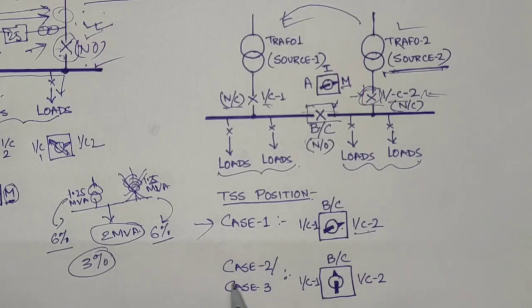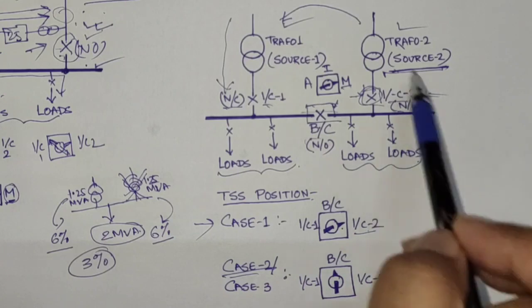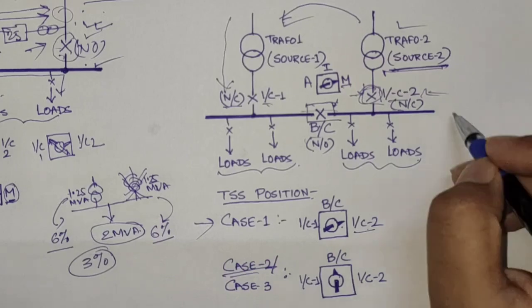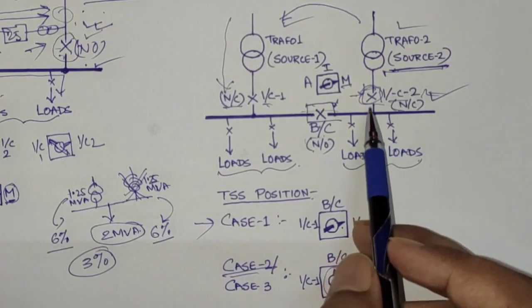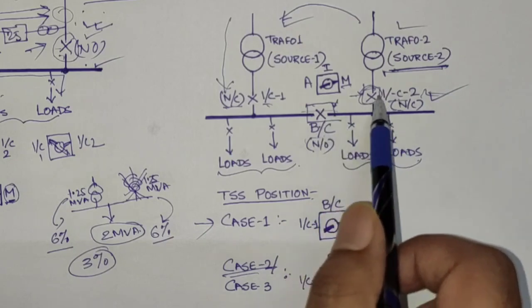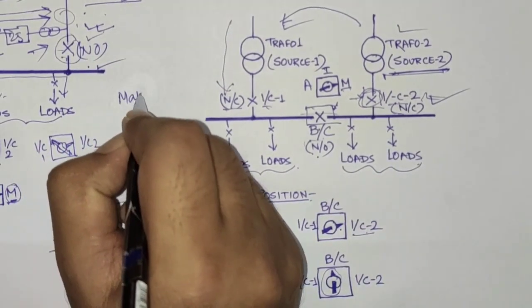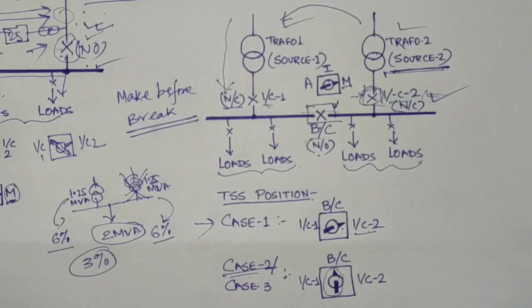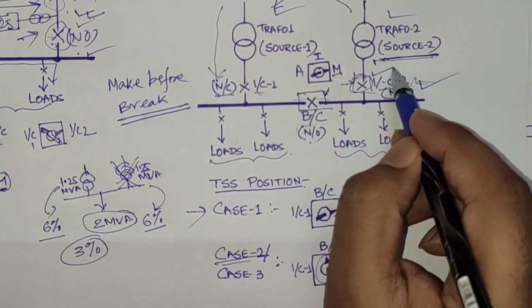In Case 2, Transformer 1 is now carrying the entire bus load after Transformer 2 was taken for maintenance. Now Transformer 2 has been maintained and we want to restore it to the circuit. We close Incomer 2 and trip the bus coupler — so the trip selector switch is set to the bus coupler. We give a closing command to Incomer 2; the synchro-check relay checks the voltage and allows closing, then trips the bus coupler. Remember: momentary paralleling is a make-before-break operation — the closing is done first, then the tripping.